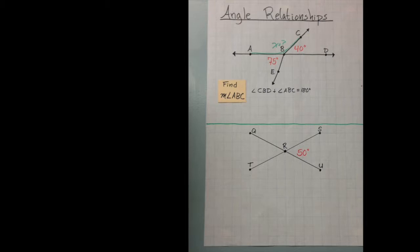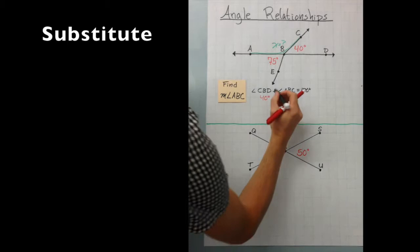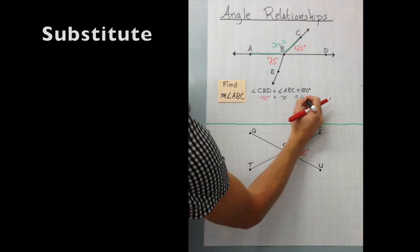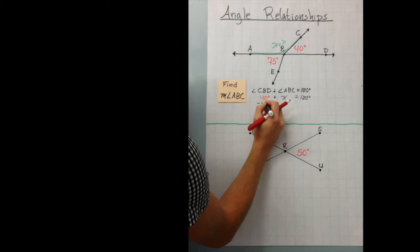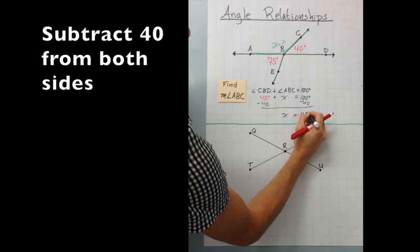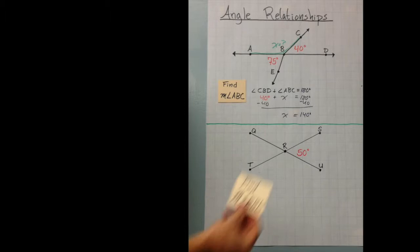So let's start with 40. CBD is 40 degrees. And we don't know what ABC equals. That's our problem. So let's call it X equals 180 degrees. Well, this is just simple algebra now. We just subtract 40 from both sides. And what we're left with is X equals 140 degrees. Done.